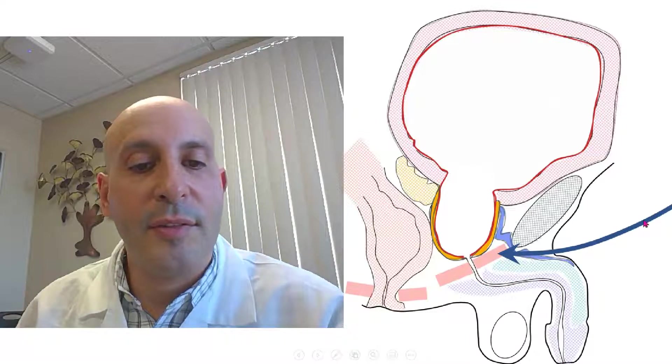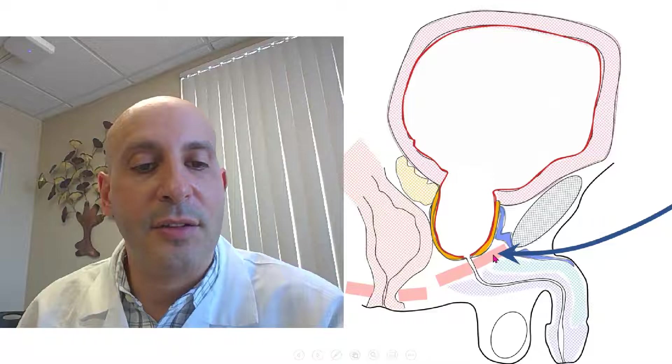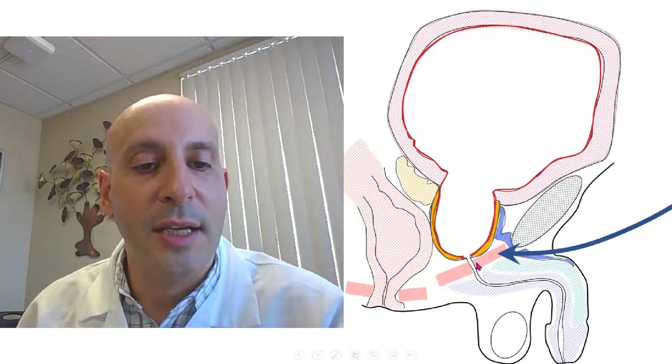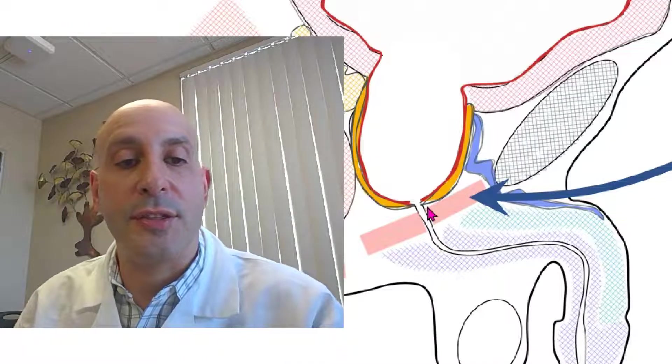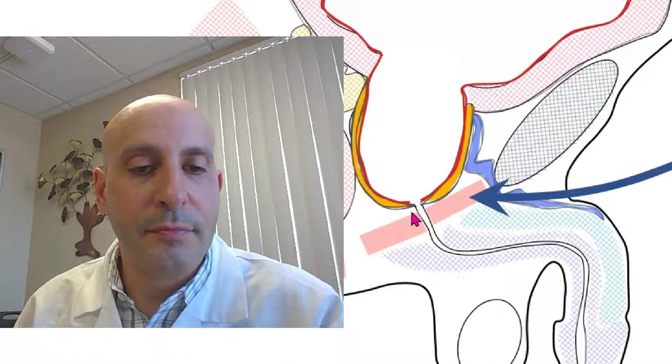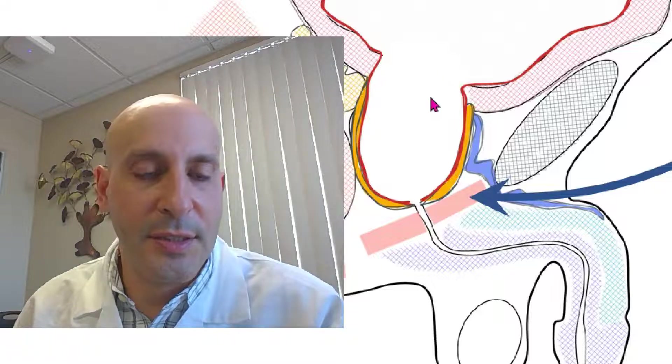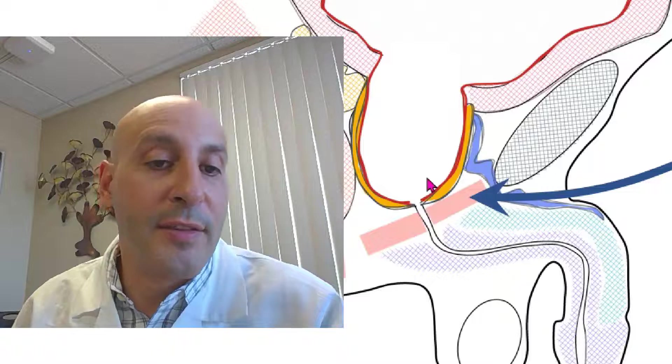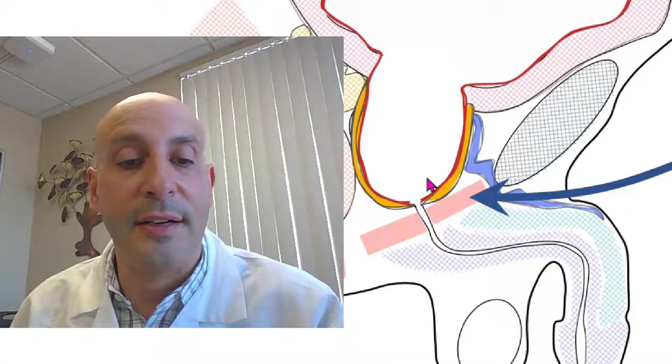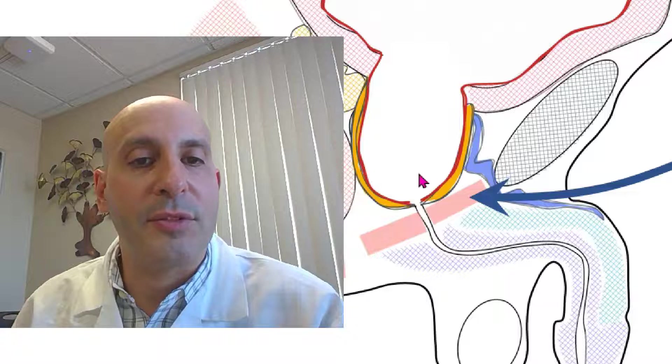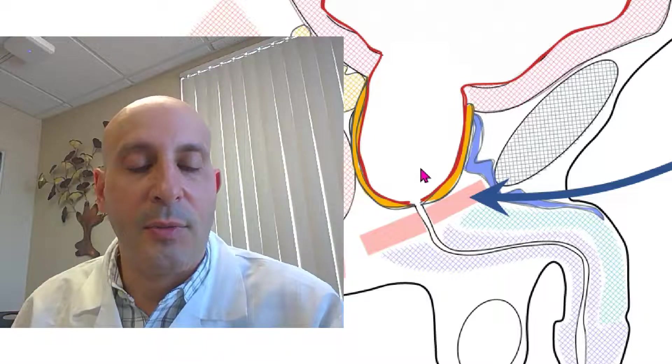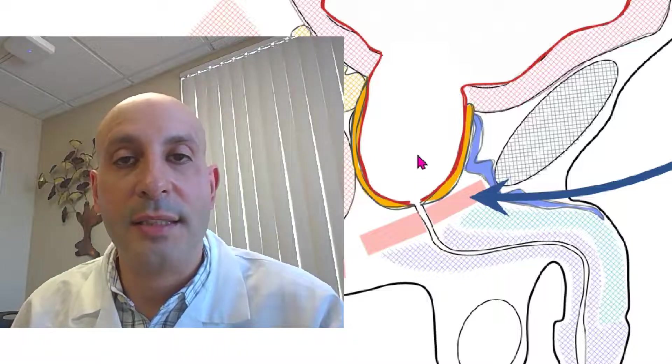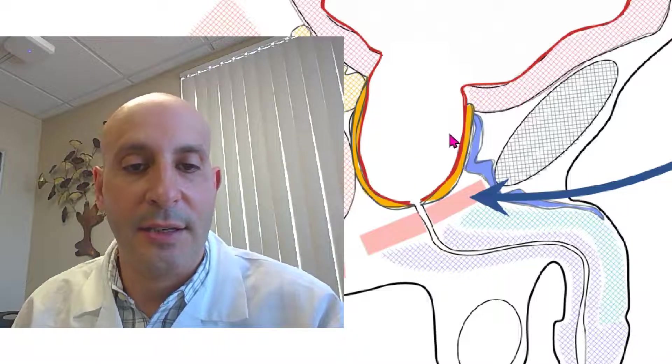It's important to point out, this right here is the external urinary sphincter. That's the muscle that pinches the tube closed and prevents accidents while you're just trying to hold your urine. With any of these procedures, there's about a 1% risk of injury to that muscle. The exact way the injury happens is not entirely clear. But about 1% of patients will have trouble holding the urine with leakage, for example, with coughing or sneezing. So that's robotic simple prostatectomy in a nutshell.